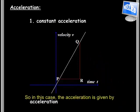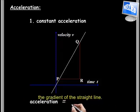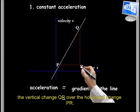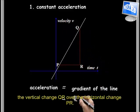So in this case, the acceleration is given by the gradient of the straight line. In that case, acceleration is given by the vertical change UR over the horizontal change PR.